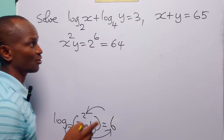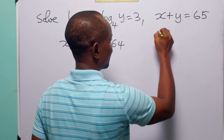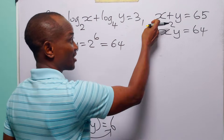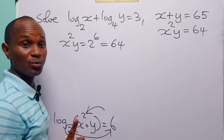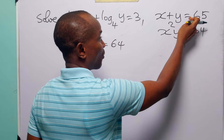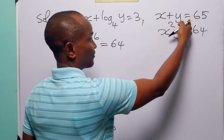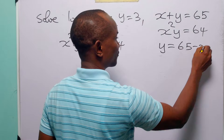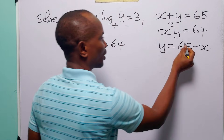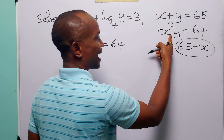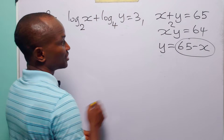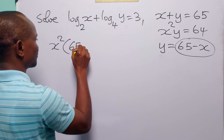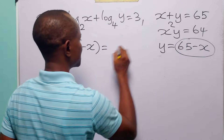So the two equations we now have to solve are x plus y is equal to 65, and x squared times y is equal to 64. It is easy to solve these two equations. All we have to do is get an expression for y from the first equation. When we subtract x from both sides we have y is equal to 65 minus x. Then we plug 65 minus x in for y in the second equation, giving x squared times (65 minus x) is equal to 64.